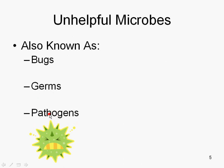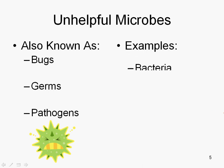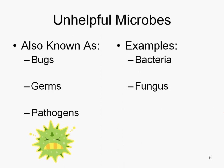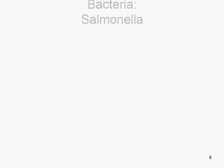The word pathogen — patho is the root that means disease, and gen is like genesis, the start of something or where something comes from. Examples that we're looking at today are bacteria, fungus, virus, and protozoa.